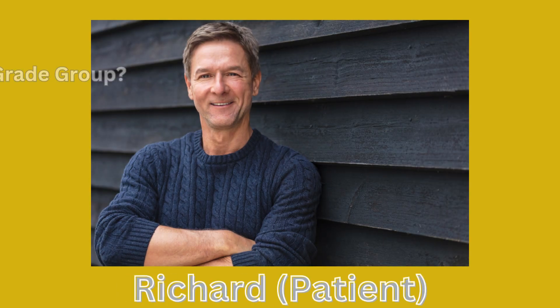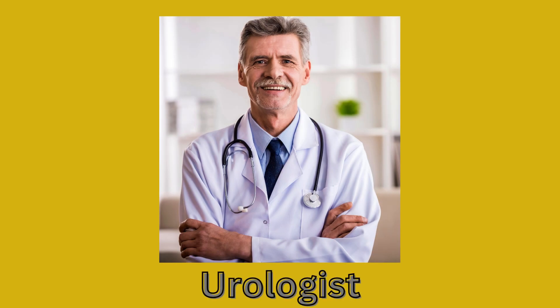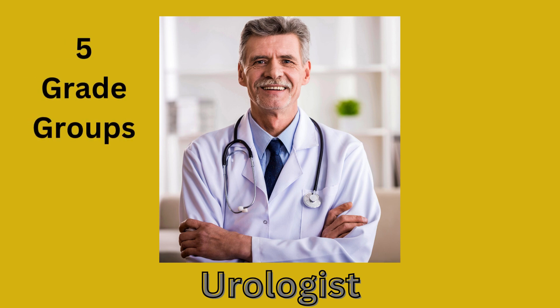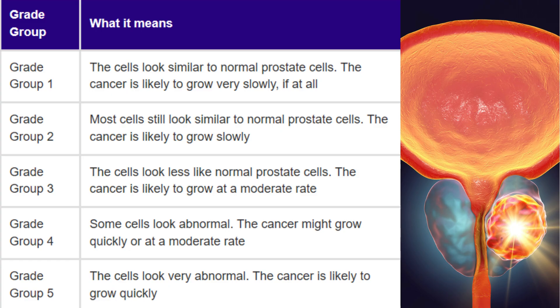Thank you, doctor. What is a grade group and how many grades are there for prostate cancer? A grade group is a measure of how aggressive the cancer cells are. Overall, there are five grades of prostate cancer. Grade 1 is the lowest and least aggressive, and grade 5 is the most aggressive, as shown in this table.